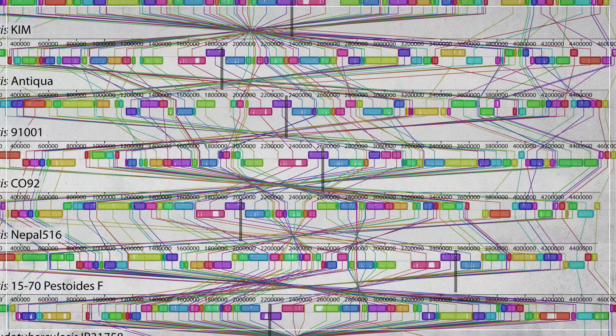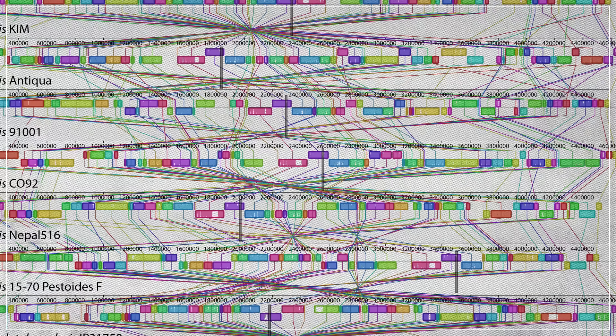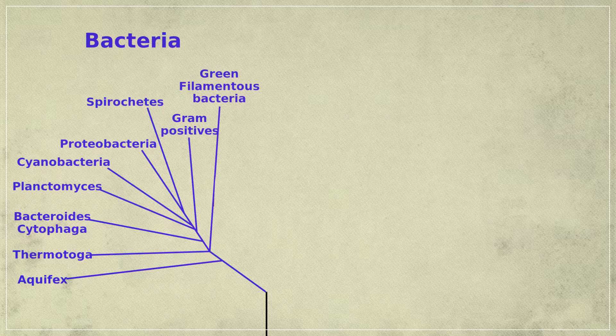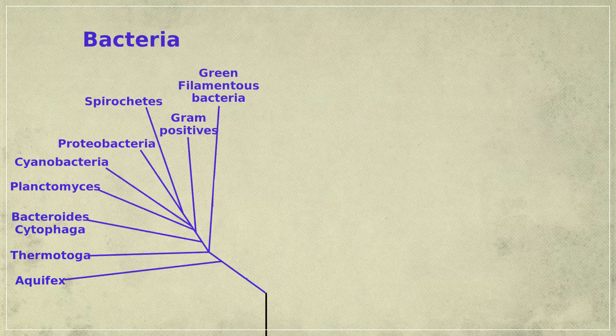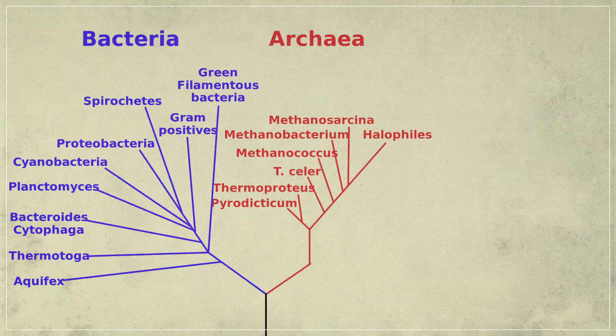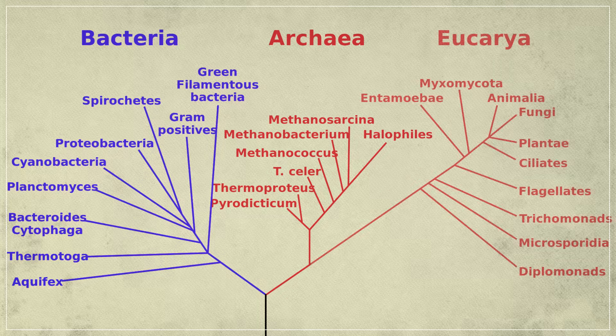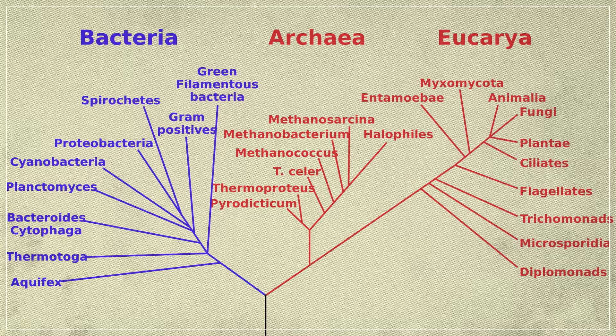But in the last 20 years, the genetic revolution has redrawn the tree of life. Recently, many scientists have begun to argue that the tree of life should have two main branches, with bacteria on one branch and archaea, plus all of the eukaryotes on the other.